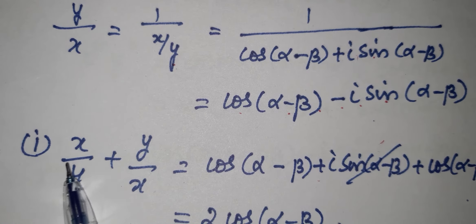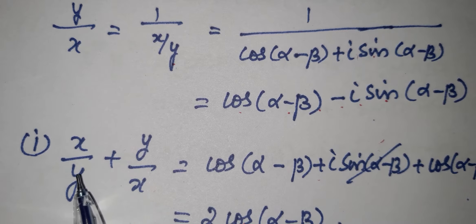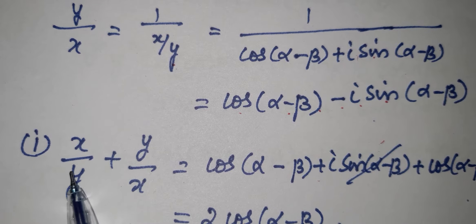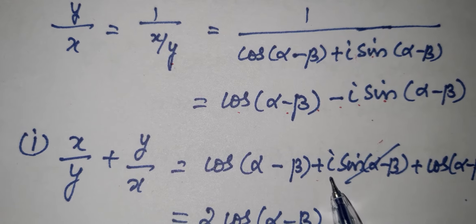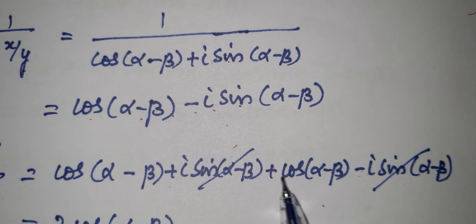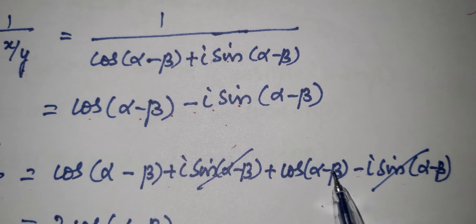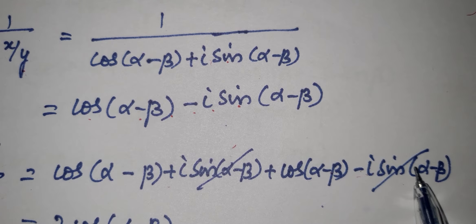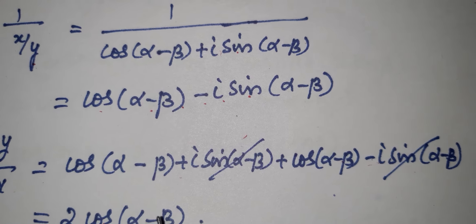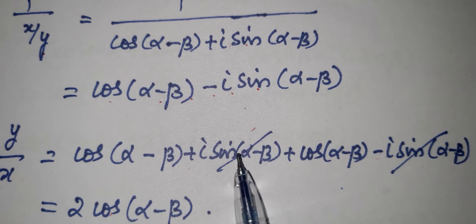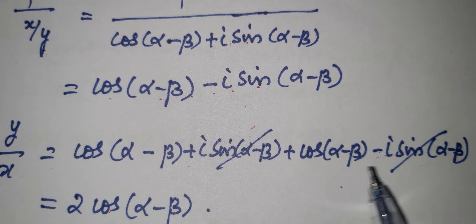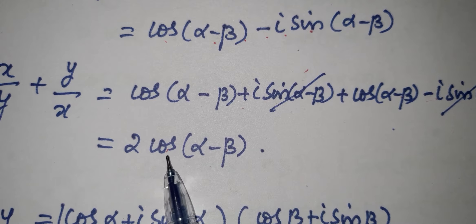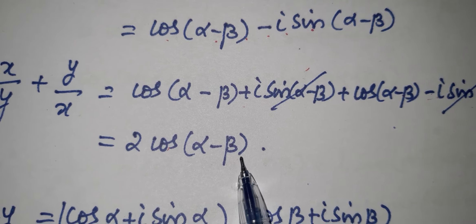The first subdivision is x/y + y/x. Adding the two values: cos(α−β) + i·sin(α−β) plus cos(α−β) − i·sin(α−β). The i·sin terms cancel, giving 2cos(α−β).